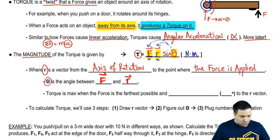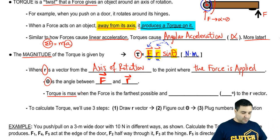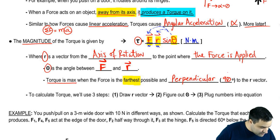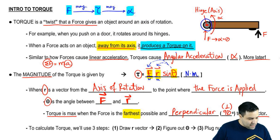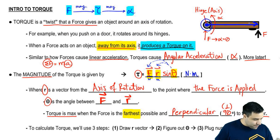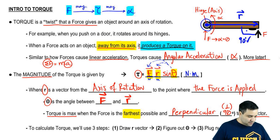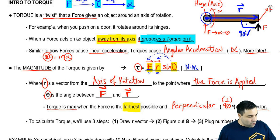To maximize torque — meaning to apply the least force and get the most rotation — you want to apply the force as far as possible from the axis and perpendicular to the R vector. Perpendicular means 90 degrees. The R vector goes from the axis of rotation to where the force is applied, and you want your force to make a 90-degree angle with it. That's how you get maximum torque.